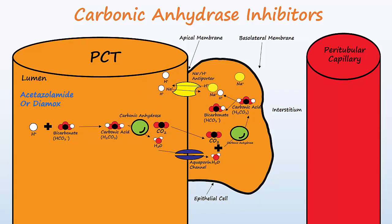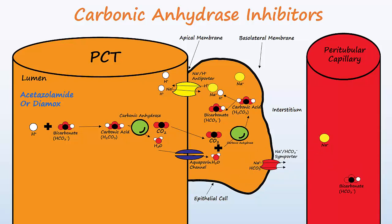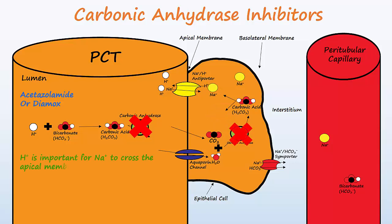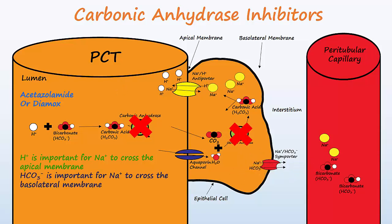Sodium enters the cell in exchange for hydrogen ions via an antiporter. Sodium and bicarbonate cross the basolateral membrane by way of sodium-bicarbonate symporters, and then enter the blood. Treatment with carbonic anhydrase inhibitors decreases the amount of carbon dioxide and water produced in the lumen, and hydrogen and bicarbonate ions produced inside the cell. Hydrogen ions are important for sodium to cross the apical membrane, while bicarbonate ions are important for sodium to cross the basolateral membrane.